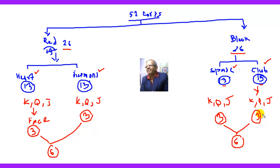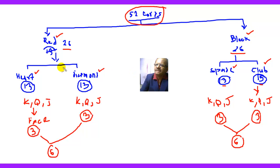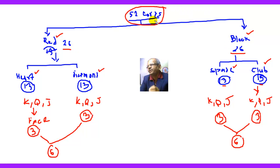Let me revise this once more so that the concepts are clear. In all there are 52 cards — 26 are red cards and 26 are black cards. These red cards are divided into heart and diamond, so there are 13 heart cards and 13 diamond cards. Black cards are divided into spade and club, so there are 13 spade cards and 13 club cards. Together, 26 black and 26 red cards form 52 total cards.